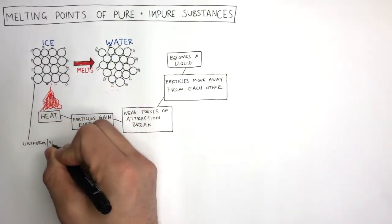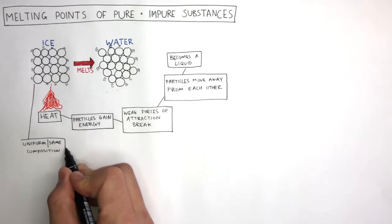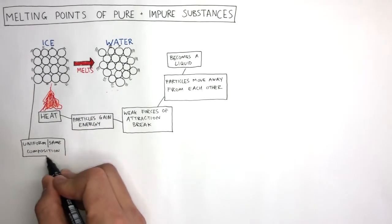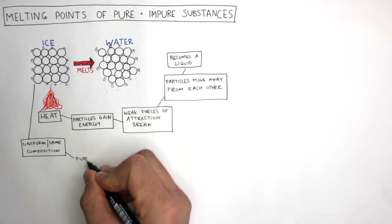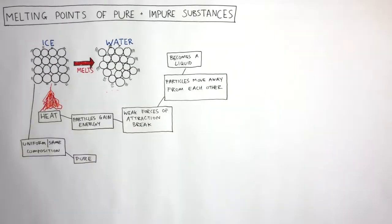Pure ice has a uniform composition. This means the composition is the same throughout. Therefore, ice is a pure substance. Ice is a pure substance because it is made of 100% water molecules and has a fixed composition throughout. The water molecules are the same in every part of the substance.